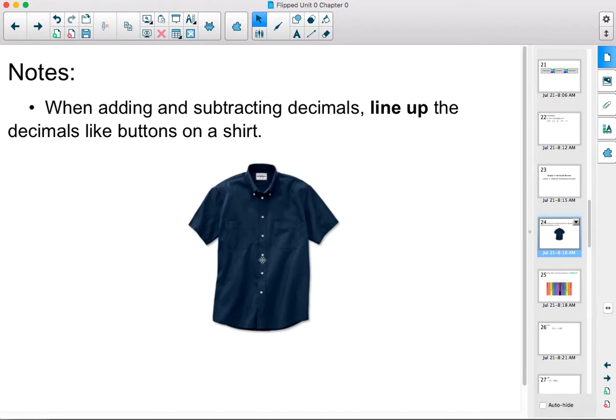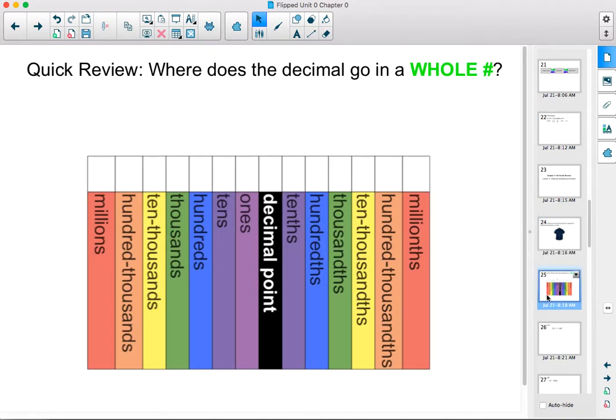So take a look at this example shirt here. The decimals or the buttons are all in a line. That would be all the numbers we're adding together plus the answer at the end. Very easy. Let's get right to it.